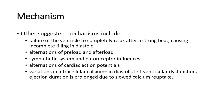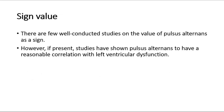Additional proposed mechanisms include alternations of preload and afterload, sympathetic system and baroreceptor influences, alternations of cardiac action potentials, and variations in intracellular calcium — where in diastolic left ventricular dysfunction, ejection duration is prolonged due to slowed calcium reuptake. For its sign value, there are few well-conducted studies on pulsus alternans as a sign; however, if present, studies have shown it to have a reasonable correlation with left ventricular dysfunction.